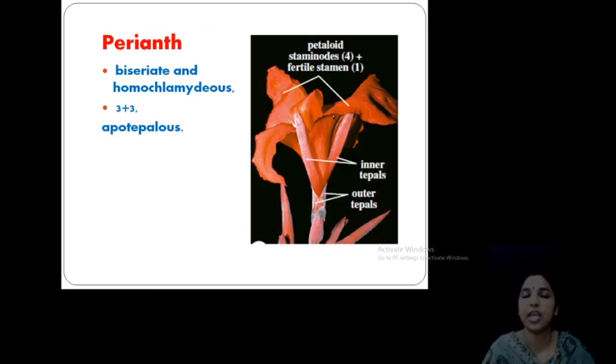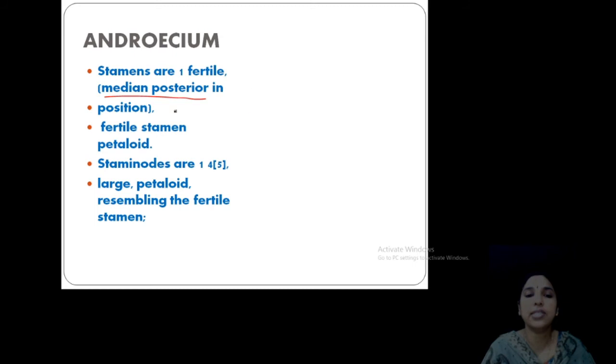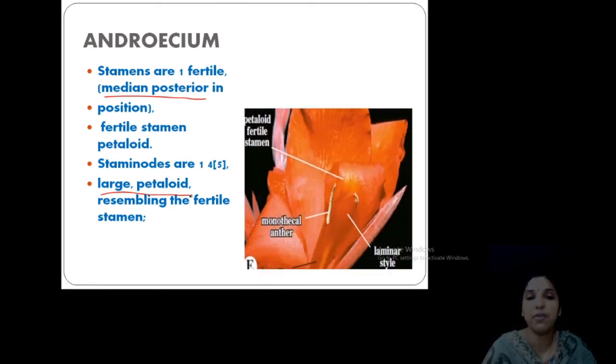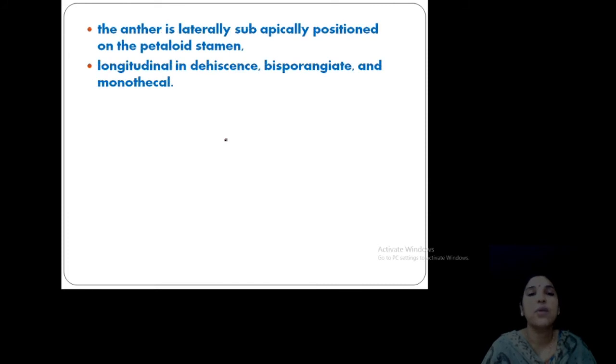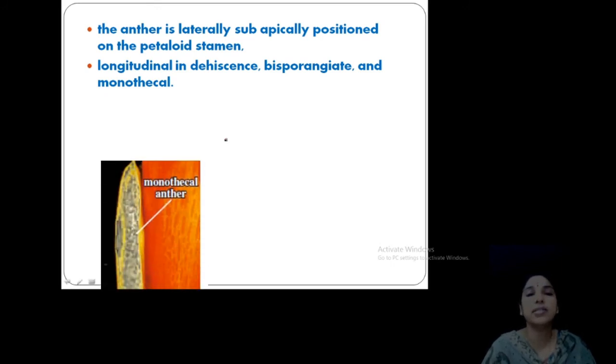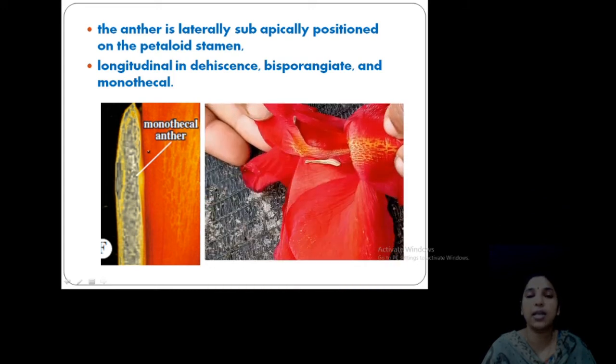They are petaloid stamens. See, this is the petaloid condition, petaloid staminodes four and one fertile stamen. And the staminoids usually one, four or five, large petaloid ones. That is a very important one. Staminodes are the large petaloid one that bear the fertile stamen. See, this is the petaloid stamen, and it contains the petaloid portion containing the stamen. And style is also laminar. All parts are petaloid or laminar in appearance. Then the anther is positioned on the petaloid stamen. Dehiscence longitudinal. See, this is the monothecal anther.